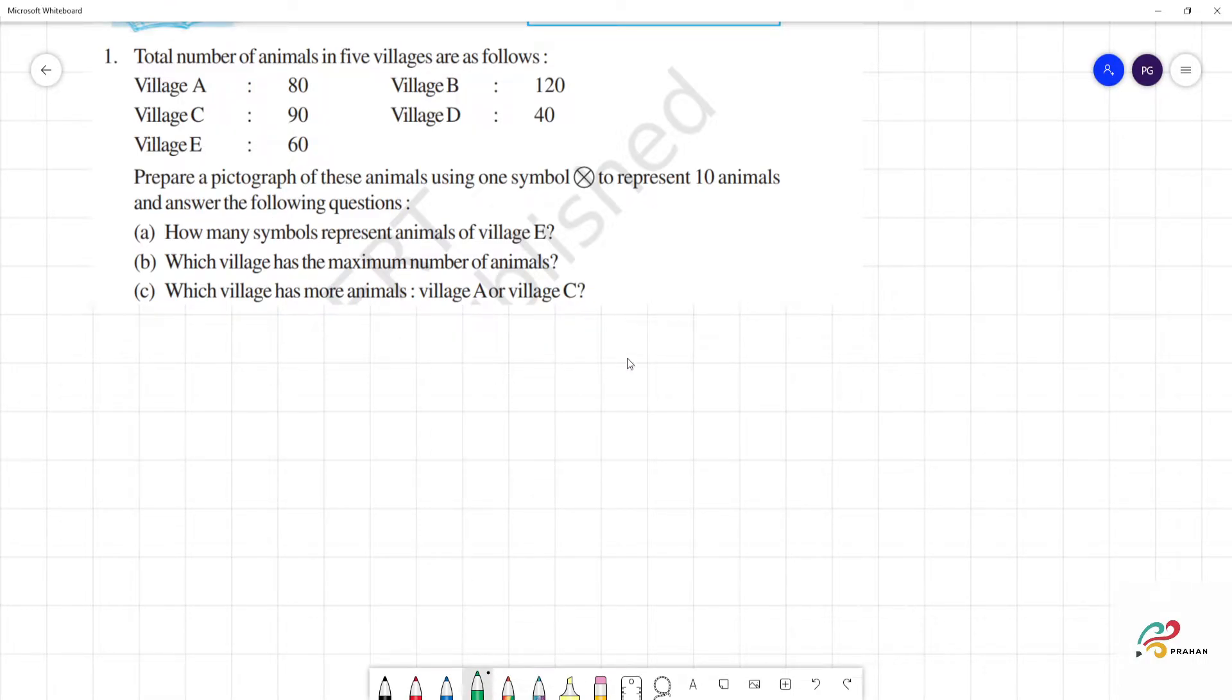The total number of animals in five villages are as follows. Village A: 80, Village B: 120, Village C: 90, Village D: 40, Village E: 60.